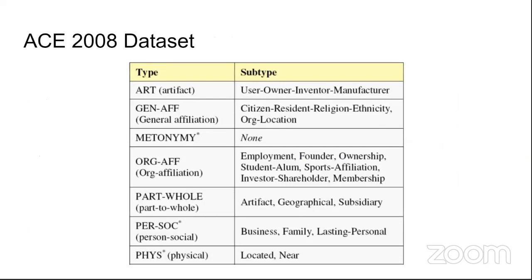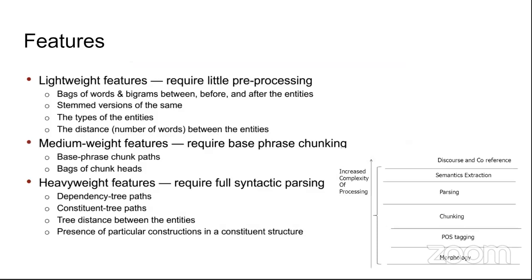The ACE 2008 dataset includes organizational affiliation relations, part-to-whole relations, person social relations, business relations, and family relations — many improvements over the 2003 dataset.